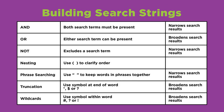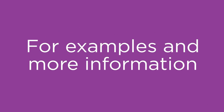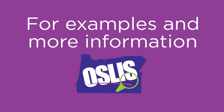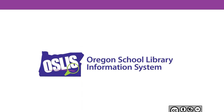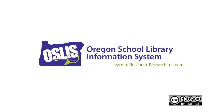To recap, in the two tutorials about building search strings, we covered the Boolean operators AND, OR, and NOT; nesting; phrase searching; and the related concepts of truncation and wildcards. Knowing how to use these search strategies puts you in the driver's seat to help you find exactly what you're looking for. For specific examples and for more information about this topic and the entire research process, explore OSLIS — learn to research, research to learn.